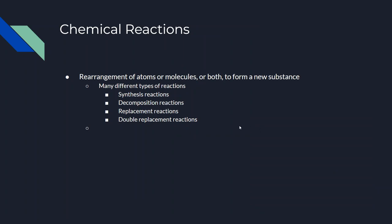Chemical reactions. What is a chemical reaction? It's a rearrangement of atoms or molecules, or both, to form a new substance. There are many different types of reactions, including synthesis reactions, decomposition reactions, replacement reactions, and double replacement reactions.